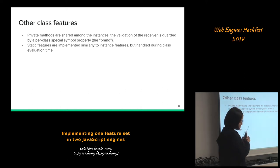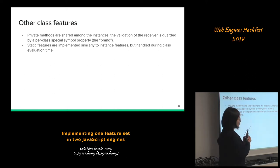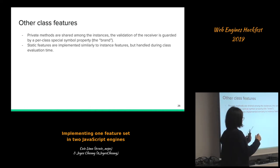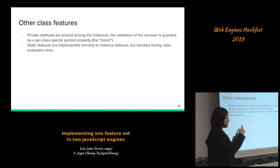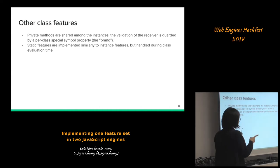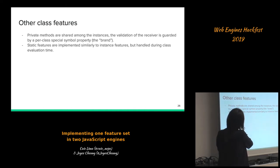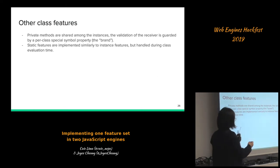Private methods are also implemented using this same infrastructure. Private methods are shared among instances, so we do the same thing as for private fields during class evaluation time. The validation of the receiver is guarded by a per-class special symbol property — we use one symbol per class to check whether the receiver is valid, rather than assigning different symbols for different parameters. Static features are implemented similarly to instance features, with the difference that they are handled during class evaluation time instead of in the constructor.